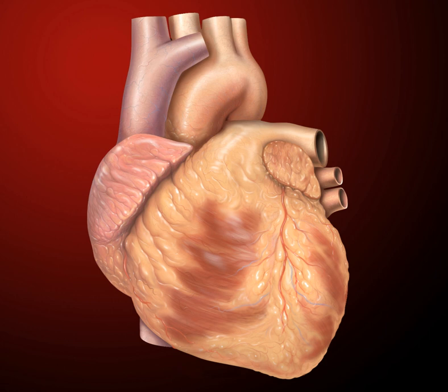The heart is a muscular organ in most animals, which pumps blood through the blood vessels of the circulatory system. Blood provides the body with oxygen and nutrients, as well as assisting in the removal of metabolic wastes.